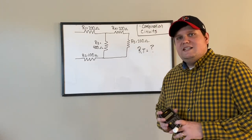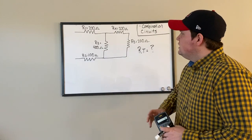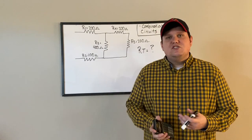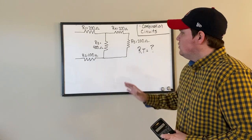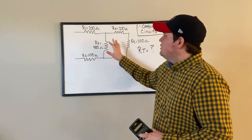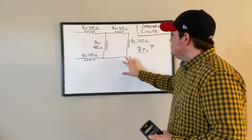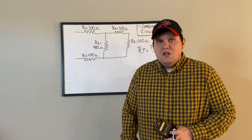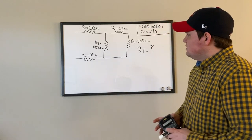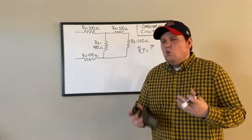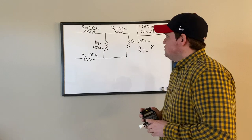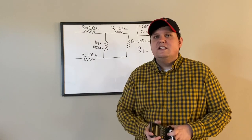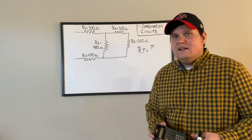Today we're going to learn to work combination circuits. In particular, we're going to be focusing just on total resistance today. So first let's define exactly what a combination circuit is — a combination circuit is a circuit with elements of series and parallel within the same circuit.